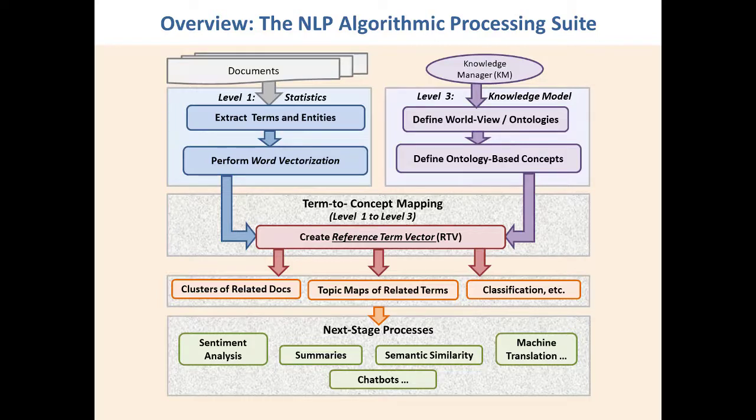We see that there are two major processes. One is extracting the terms and the entities from the document — that's pretty straightforward and we're not going to give it a lot of time here. The second area is word vectorization. This can either be very simple or a bit more complex. Once we've done some vectorization with whatever process we have, we're going to create what I call a reference term vector. That's the vector we're actually going to use for the next stage of processing, along with a vector for each different document.